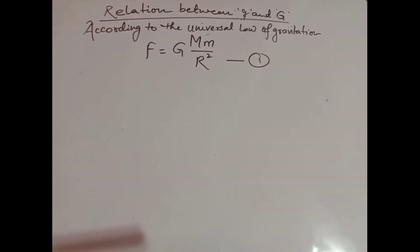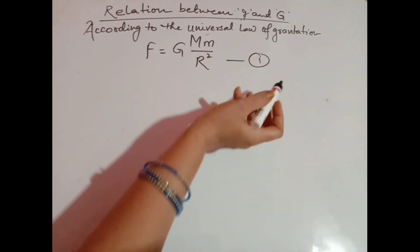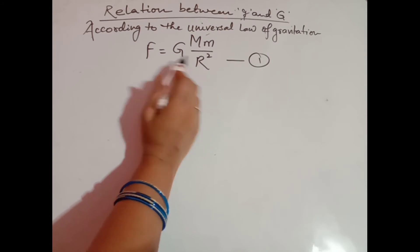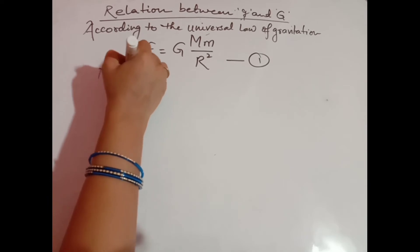If you remember the universal law of gravitation working between two bodies, the force of attraction is equal to the product of their masses divided by the distance between them. In this case, one object is Earth with mass M, another object has mass small m, and the distance between them is the radius of Earth. Make it equation number one.